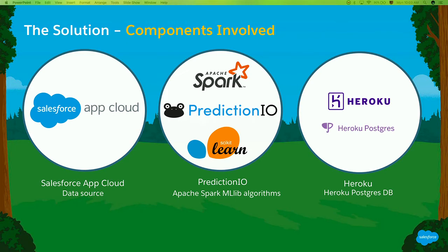The solution we have for today is composed of Salesforce App Cloud, of course. We are reaching a Prediction.io instance bundled with Apache Spark. We are also using scikit-learn, which is a Python machine learning library — if you're just starting with machine learning, scikit-learn is super easy, has a lot of examples, and is fantastic. And for storing the models, predictive models, and events, we are using Heroku.